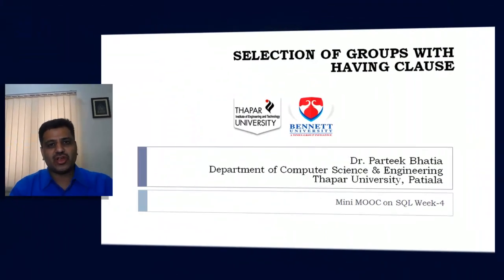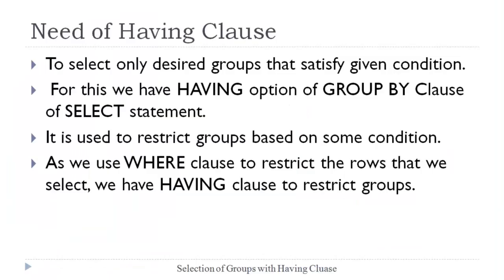Welcome to this video tutorial on selection of groups with the HAVING clause. In this session we will discuss the need of the HAVING clause of the SELECT statement, its usage and implementation. As we have already discussed, we can use GROUP BY clause to make grouping on a single column or group of columns. Sometimes it is important to select some desired group out of all available groups based on some condition, and to perform this task we have to use the HAVING clause with GROUP BY clause of the SELECT statement.